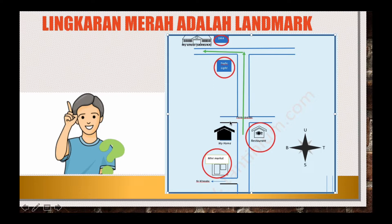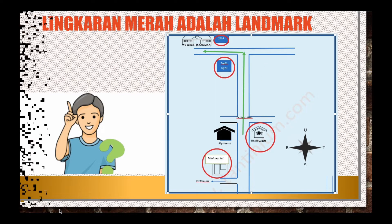Misalnya rumah saya ada di seberang dari sebuah perempatan — di sana ada sebuah restoran, nah itu adalah rumah yang kalian maksud. Lalu kemudian ada hijau di sana, itu adalah untuk denahnya, alur menuju sekolahan. Jadi kalian harus perhatikan betul landmark-nya yang mana saja.